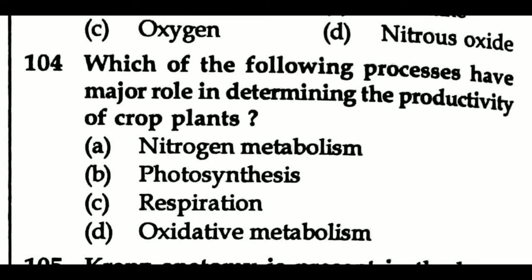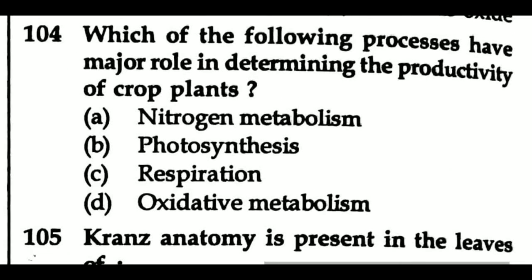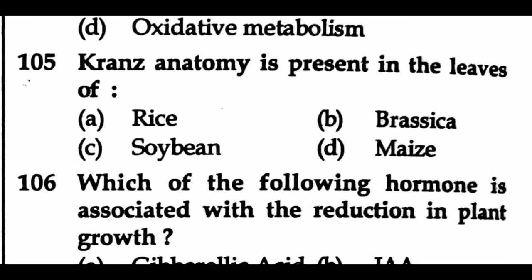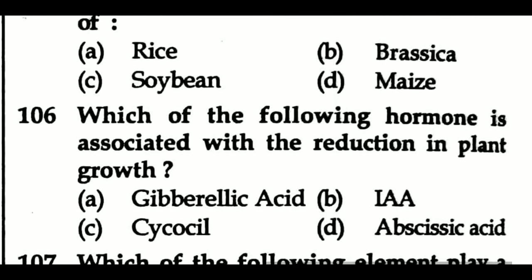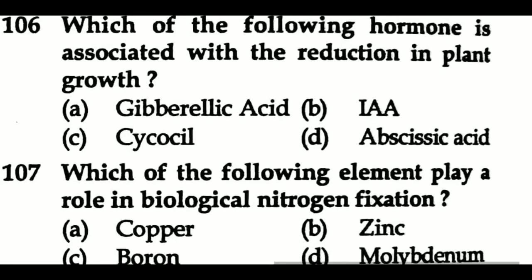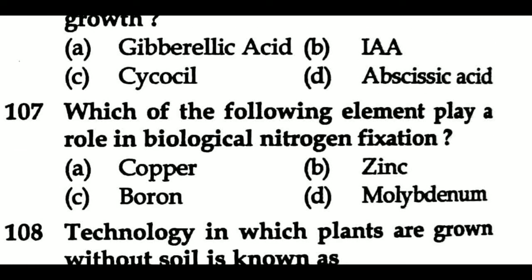Question 104: Which of the following processes has a major role in determining the productivity of crop plants? Option A: nitrogen metabolism, Option B: photosynthesis, Option C: respiration, Option D: oxidative metabolism. Question 105: Kranz anatomy is present in the leaves of — Option A: rice, Option B: Brassica, Option C: soybean, Option D: maize. Question 106: Which of the following hormones is associated with the reduction in plant growth? Option A: gibberellic acid, Option B: IAA, Option C: cytokinin, Option D: abscisic acid. Question 107: Which of the following elements plays a role in biological nitrogen fixation? Option A: copper, Option B: zinc, Option C: boron, Option D: molybdenum.